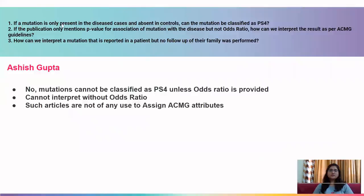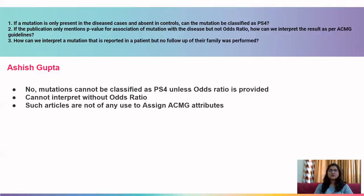The next question is by Ashish. First: if a mutation is present only in disease cases and absent in controls, can it be classified as PS4? No — mutations cannot be classified as PS4 unless the odds ratio is provided. Do not assume anything based solely on presence/absence numbers. Second: if a publication only mentions p-value for association but not odds ratio, we cannot interpret the results as per ACMG guidelines without the odds ratio. If the number of cases and controls is given, you can calculate the odds ratio as described in previous sessions.